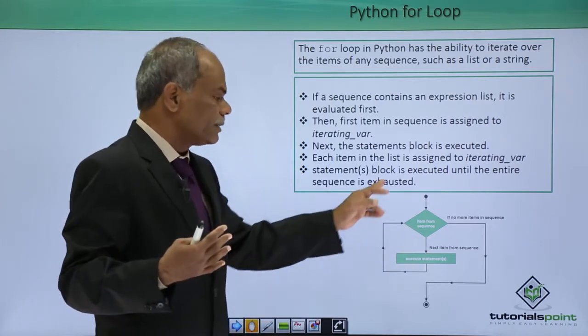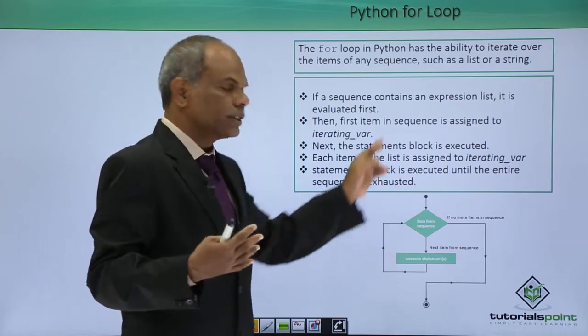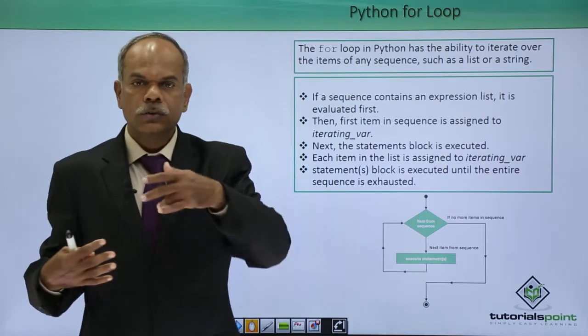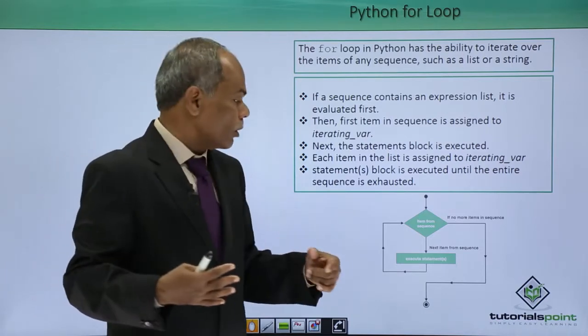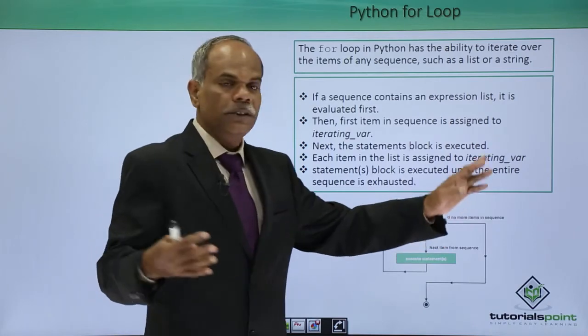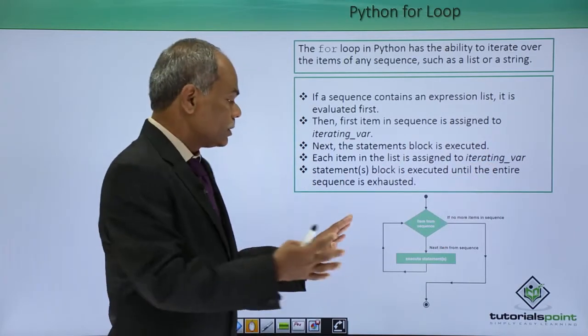This block will be executed and the next item will be processed or taken and sent to the repetition block. This will continue till no more item is there in the sequence. So, this is a flow chart.